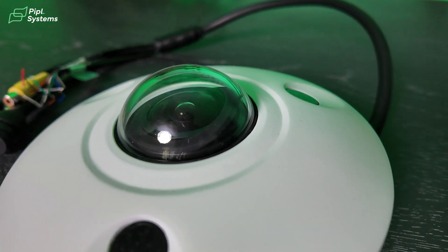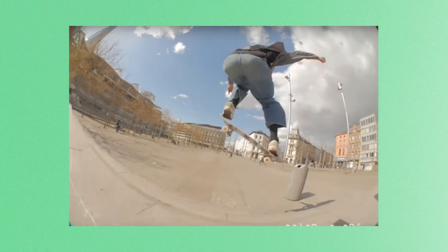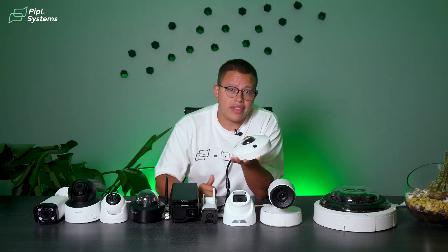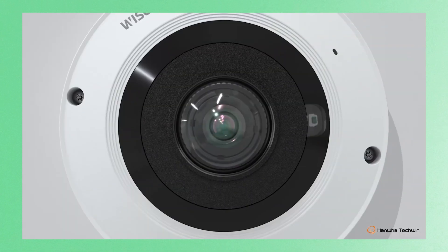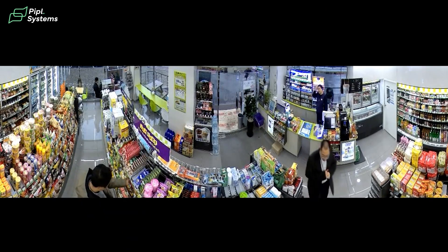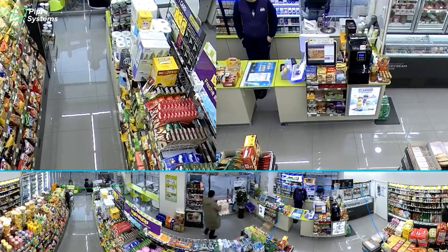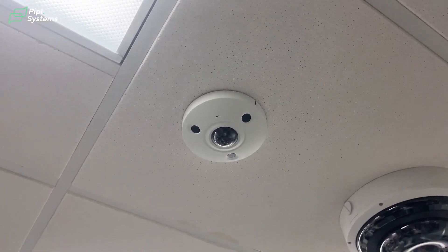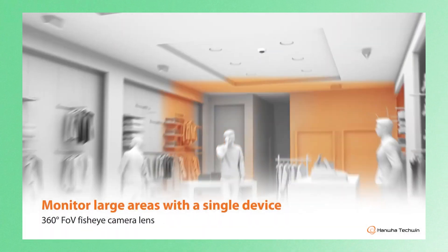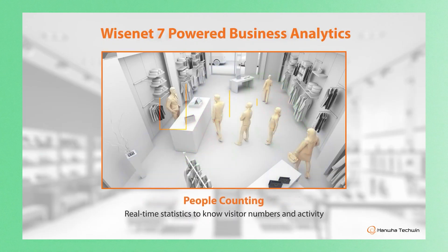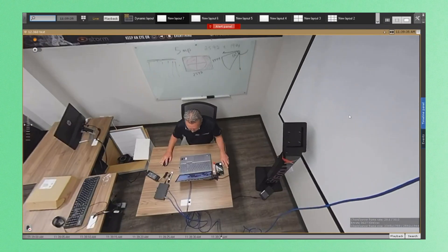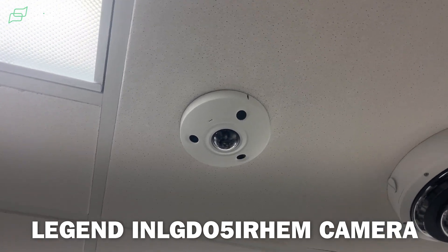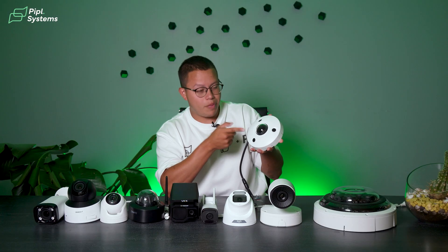What comes to mind when I say fisheye? Fisheye cameras are similar to those wide, round-angle shots in old-school skateboarding videos or the 360-degree GoPro cameras that athletes use. The same fisheye technology is used in the security industry. They offer a 360-degree view in a single camera, providing a complete panoramic view and eliminating blind spots. Specialized software allows you to zoom into certain areas of the image. It's the perfect camera to put in the middle of a square room or a large space, saving the trouble of using multiple cameras. The Legend 5-megapixel fisheye is a high-quality fisheye camera known for its extensive coverage and great features.